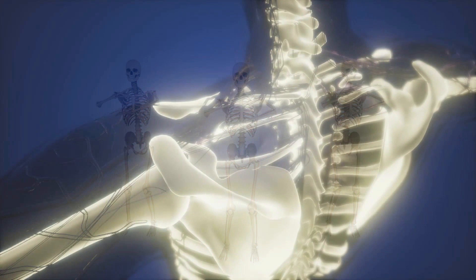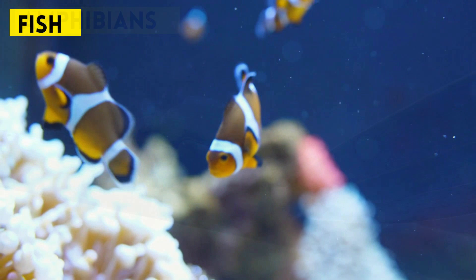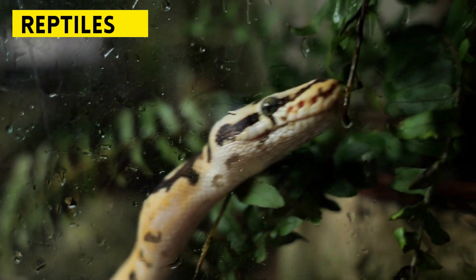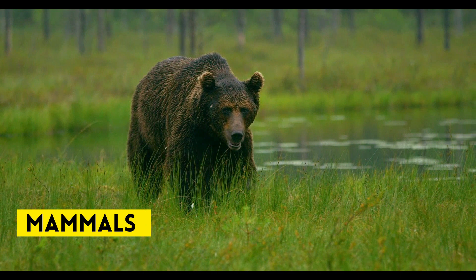A subphylum of chordates includes the vertebrates. There are 5 main classes of vertebrates: fish, amphibians, reptiles, birds, and mammals. So there we go — the 9 main phyla of animals. And remember, kindness multiplies kindness. Be kind to someone today.